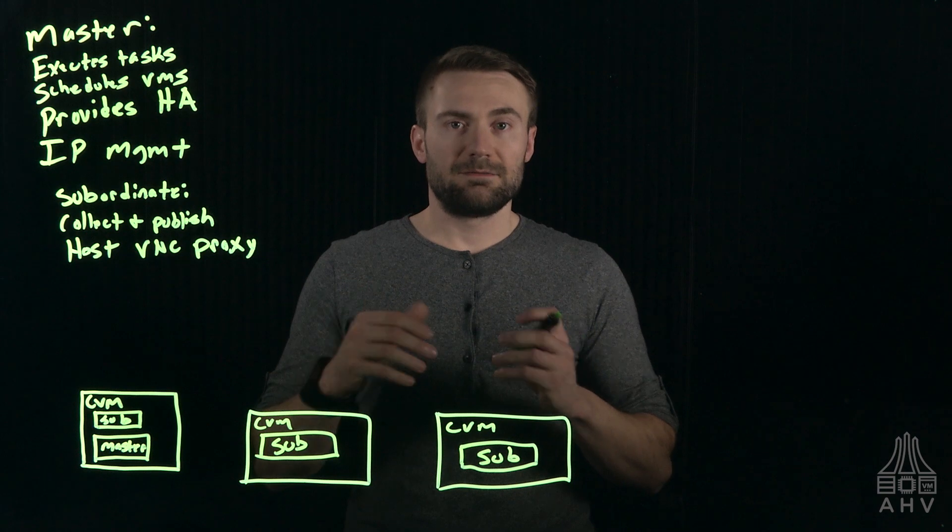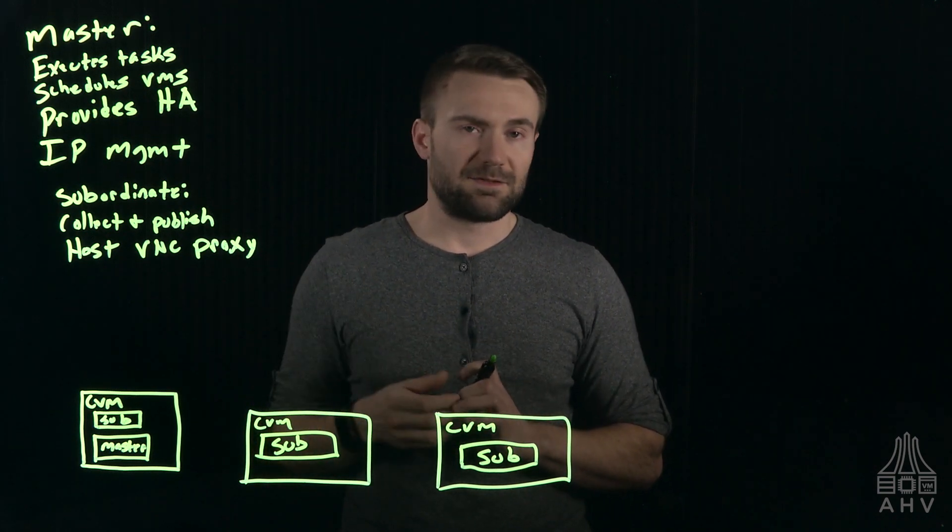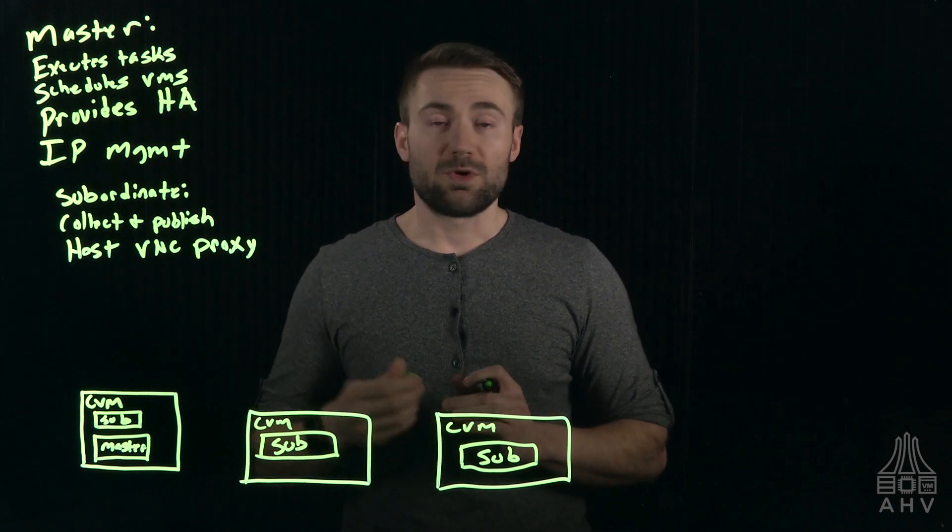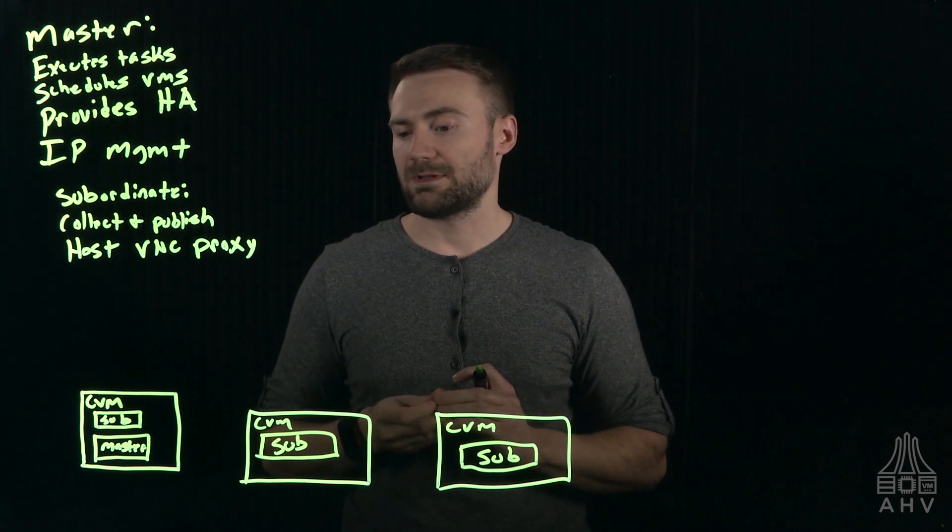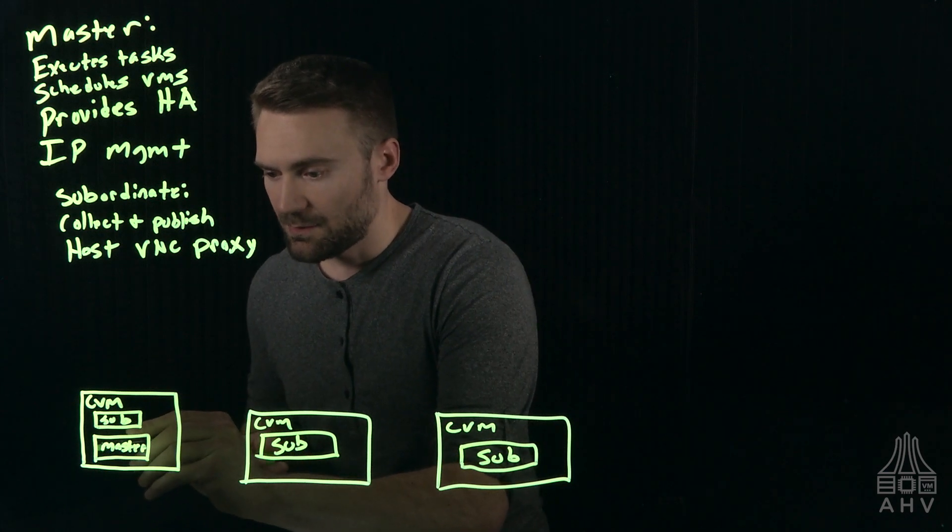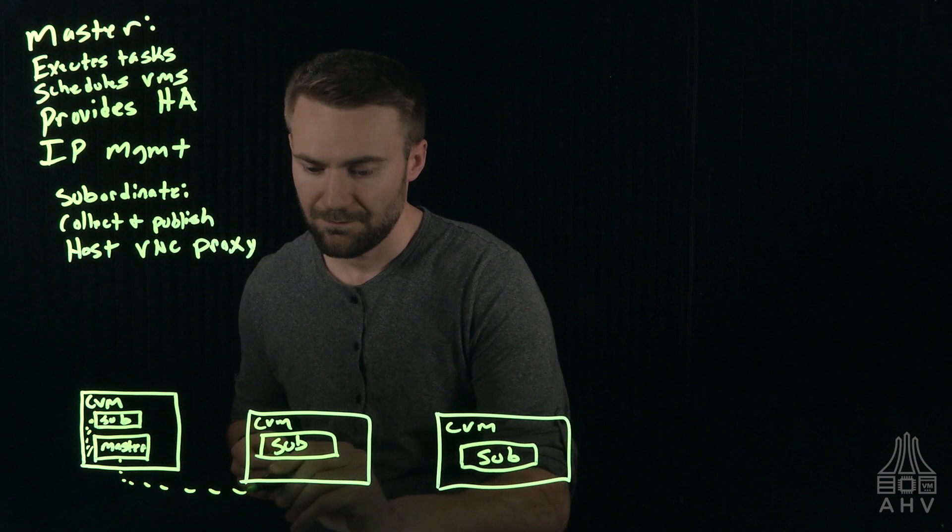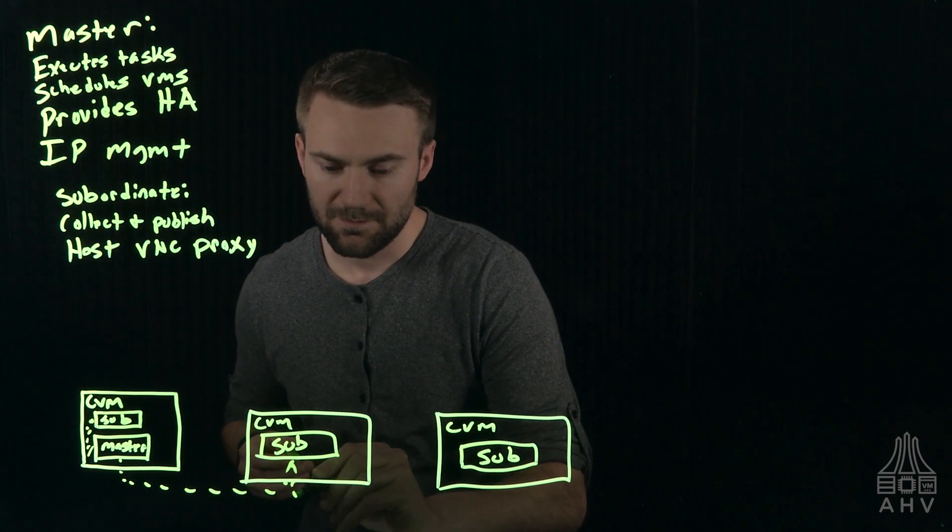The subordinate is going to be responsible for collecting and publishing statistics and also hosting a VNC proxy. So when you log in to Prism and then you're managing your VM and you use a console that's the VNC proxy. Each subordinate is responsible for hosting that service. And then there's going to be some communication like I said between the master here and each one of the subordinates.